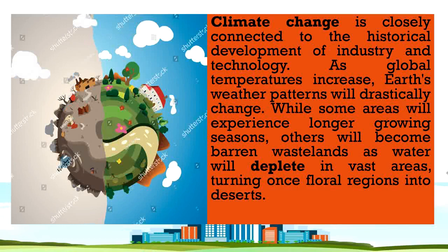Next is climate change. Climate change is closely connected to the historical development of industry and technology. As global temperatures increase, Earth's weather patterns will drastically change. While some areas will experience longer growing seasons, others will become barren wasteland as water depletes, turning floral regions into deserts. Climate change is happening not just naturally, but because of human activities. We can actually feel it — for example, it's supposed to be raining but it's too hot, or vice versa. It's changing the natural climate because of human activities.